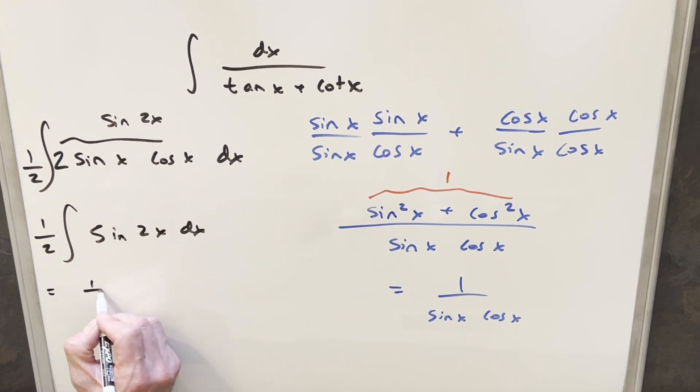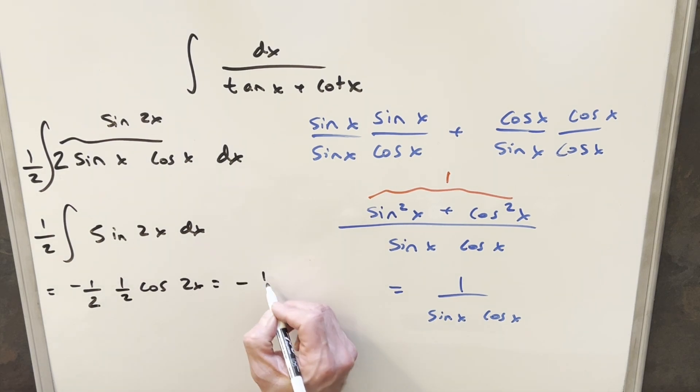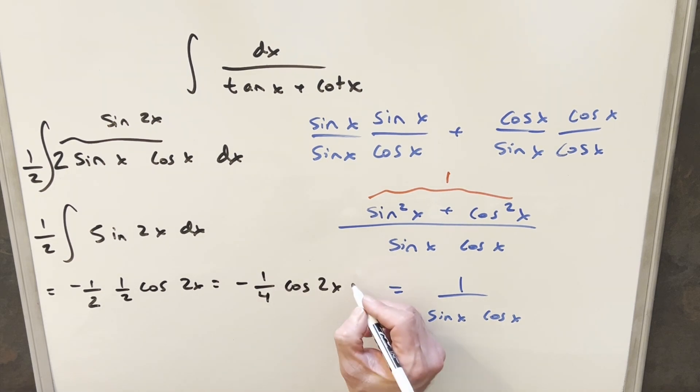We'll just integrate, so we'll have this 1 half in front. Sine 2x, the integral of that's going to be minus cosine of 2x. But then I need to take the reciprocal of this 2 and multiply by 1 half. And so for my final solution, we just have minus 1 over 4 cosine 2x plus c.